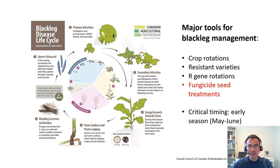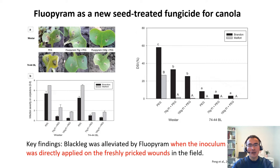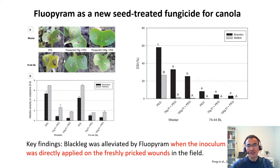With regard to seed treatment, I'm sure our next speaker, Justin Cornelison, will have more to cover. This is a case study of introducing Fluorprime, one of the succinate dehydrogenase inhibitor fungicides, to black leg control. The two figures on the left were assessed at the seeding stage, and the figure on the right was assessed at the early maturity stage. As you can see, lesion size, black leg severity, and disease severity index (DSI) in both the susceptible and resistant varieties were significantly reduced by Fluorprime seed treatment under field conditions set at Brandon and Morden. These findings were obtained when the inoculum was directly applied on fresh-pricked wounds.